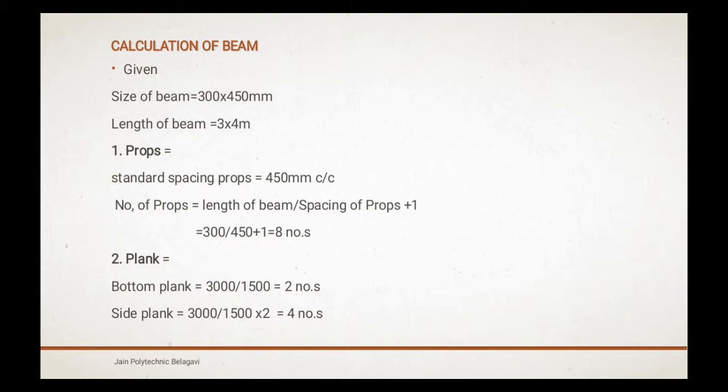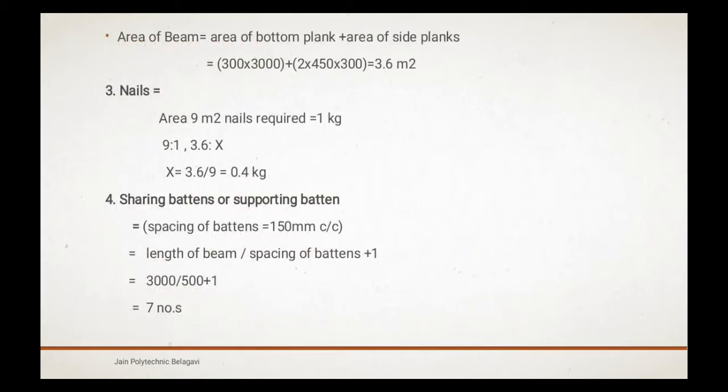Second, planks: bottom planks and side planks are calculated. Bottom plank is 2 numbers and side plank is 4 numbers. Area of beam we are going to calculate: area of bottom plank plus area of side planks. So area of beam equals 300x3000 + 2x450x300 = 3.6 m².